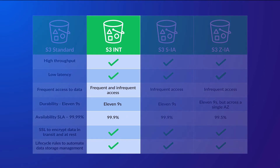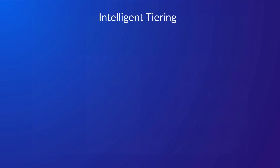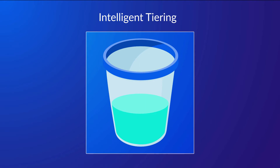S3 Intelligent Tiering. This storage class is ideal for circumstances where the frequency of access to the object is unknown — effectively where you have unpredictable data access patterns — and so by using this storage class it can help to optimize your storage costs. Depending on your data access patterns, S3 will move your objects between two different tiers: Frequent and Infrequent Access. These tiers are part of the Intelligent Tiering class itself and are separate from the other storage classes listed earlier.